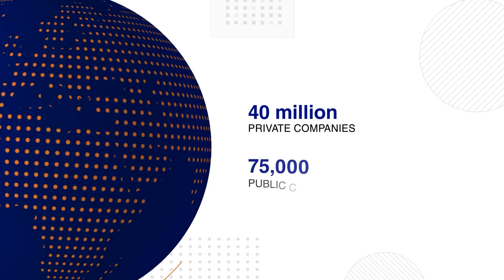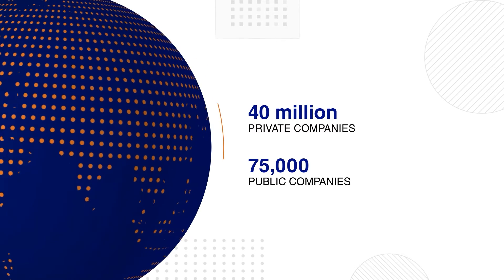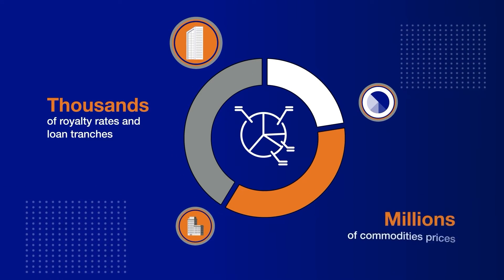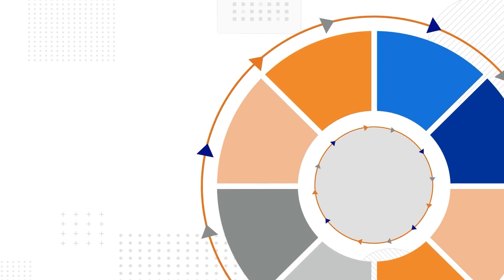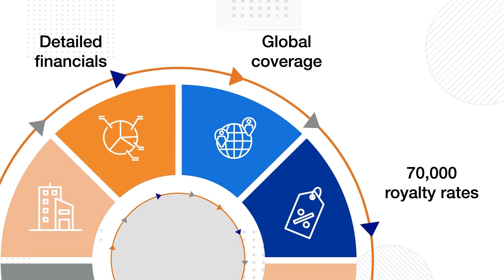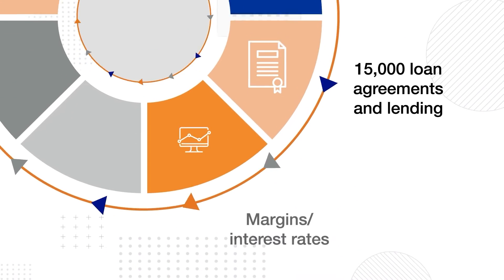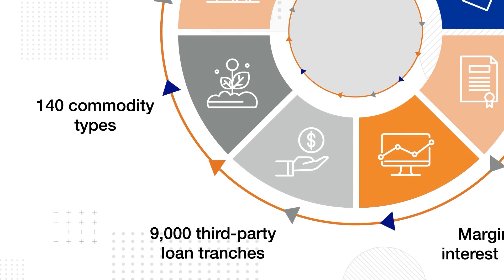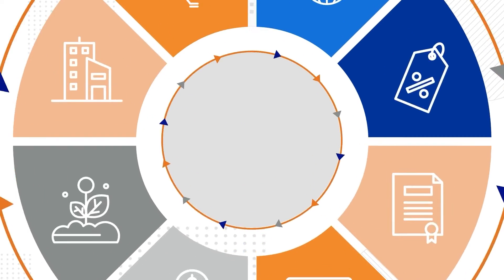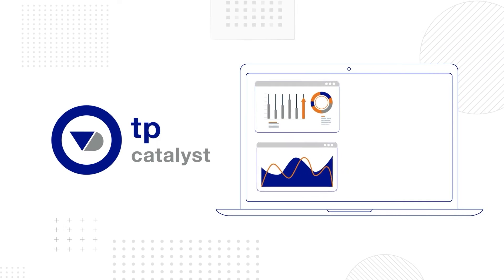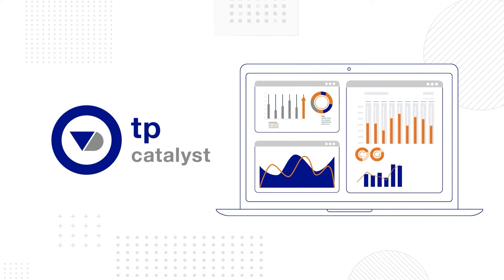We have coverage of 425 million entities globally, as well as financial data from over 40 million private companies and 75,000 public companies in every country around the globe. We also offer thousands of royalty rates and loan tranches, and millions of commodities prices. Take advantage of our extensive corporate ownership data, detailed financials, global coverage, 70,000 royalty rates, 15,000 loan agreements, compute margins and interest rates, 9,000 third-party loan tranches, and 140 commodity types with over 9.5 million daily prices. With Transfer Pricing Catalyst, you get all this data in a single, easy-to-use platform to generate sophisticated comparability searches and analyses.